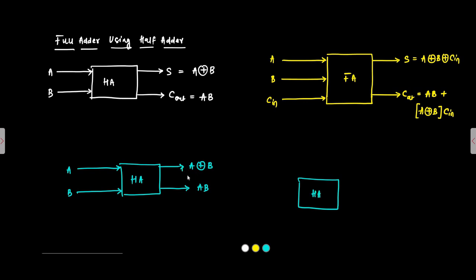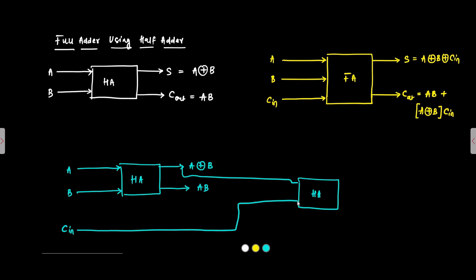Then we will use another half adder. We will give the sum output of the first half adder and the carry input bit C-in as the two inputs to the second half adder. The sum output of the second half adder will be A XOR B (one of its inputs) XOR C-in.